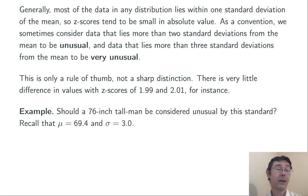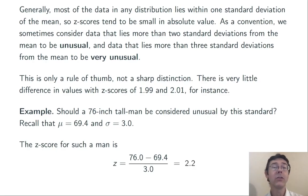Here's an example of how that standard could be applied. Should a 76-inch-tall man be considered unusual? Recall that the average height of men in the United States was 69.4 inches, and the standard deviation was 3 inches. So we compute a z-score: we take his height, subtract the mean height, and divide by the standard deviation, and we get 2.2. So this individual is 2.2 standard deviations taller than average, and we would consider that unusual according to this standard. The absolute value of that z-score is greater than 2.